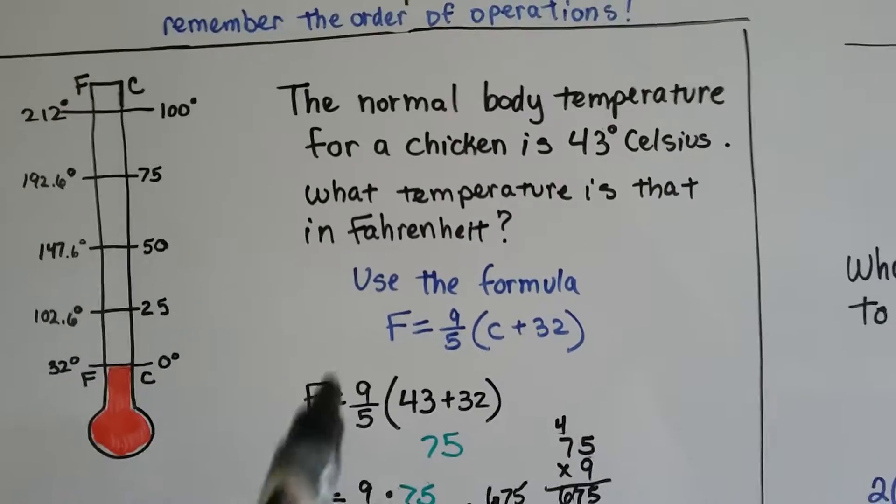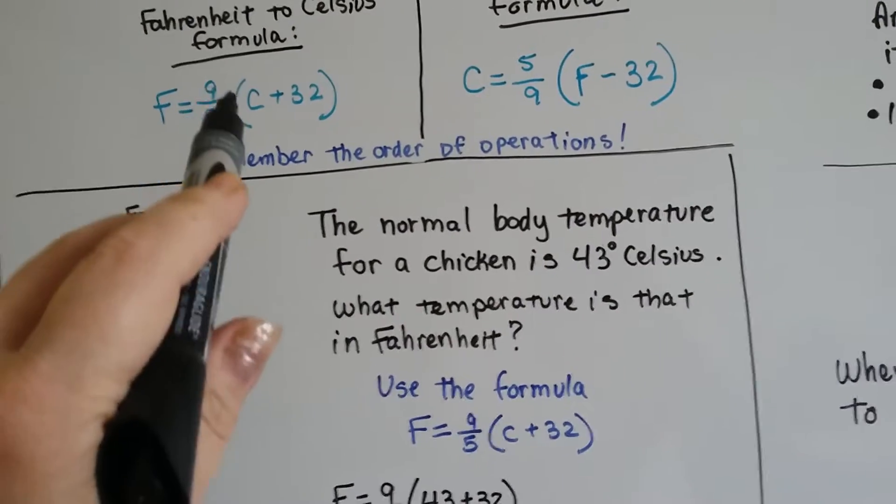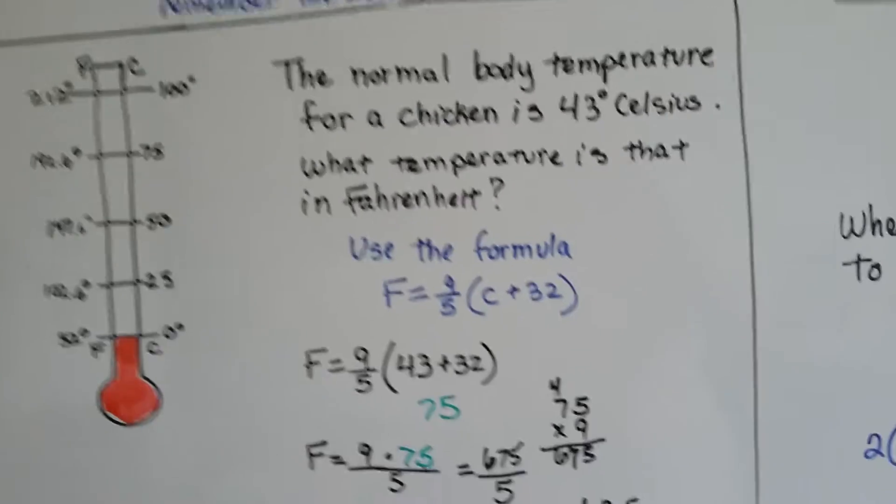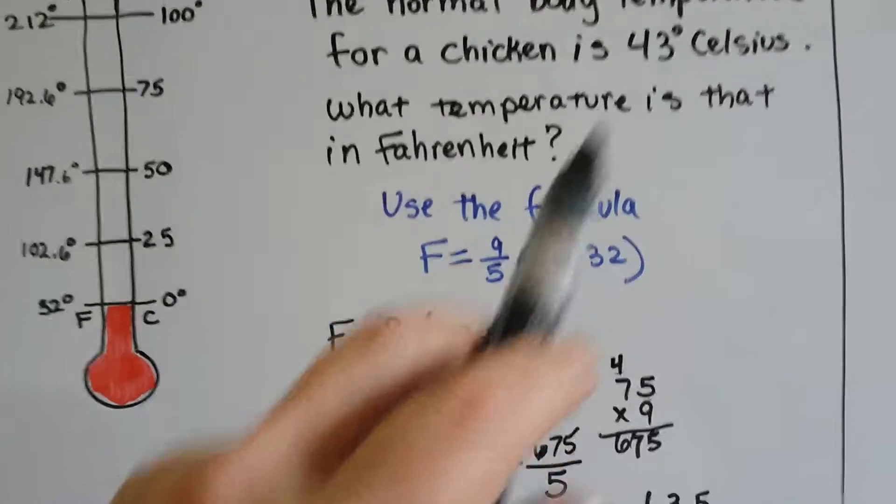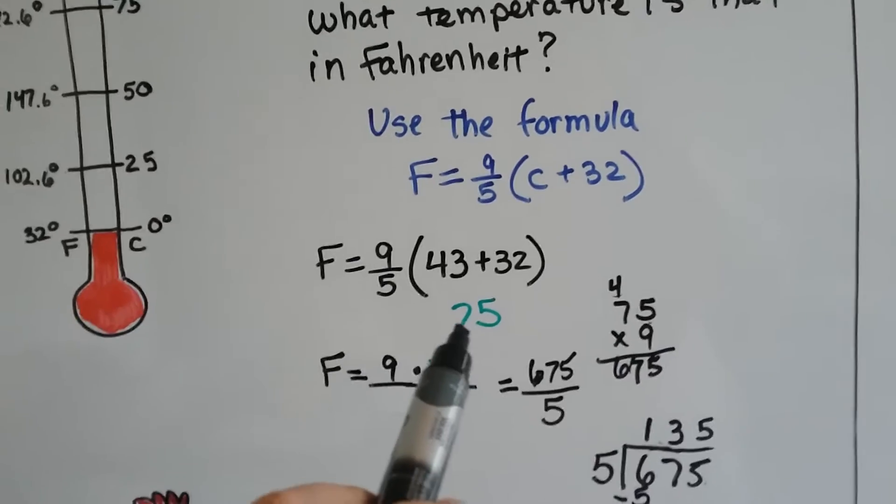So we use the Fahrenheit formula. Now we're going to multiply it by 9 and put it over 5. So we plug the 43 in where the Celsius C is. We do our addition and get 75.